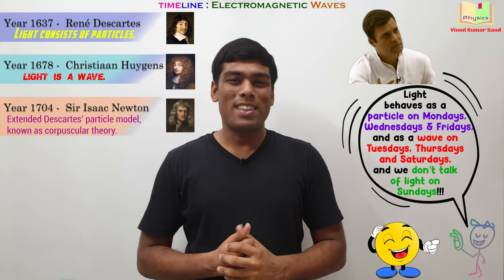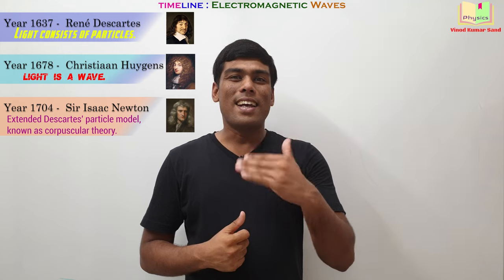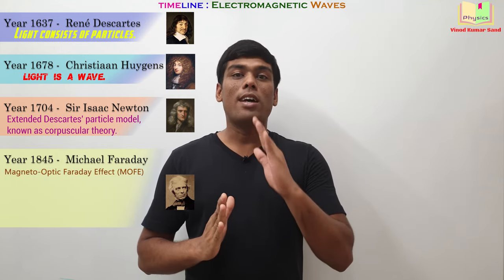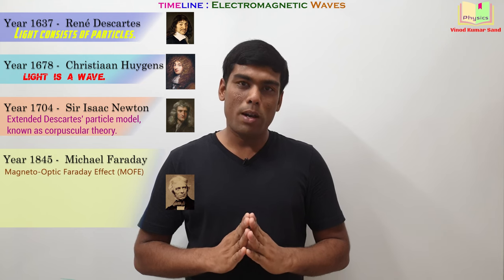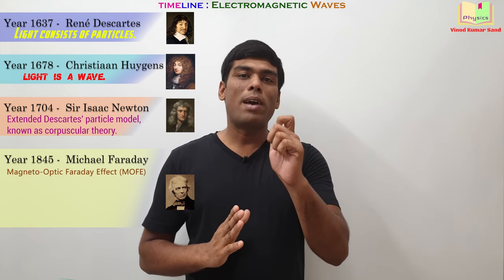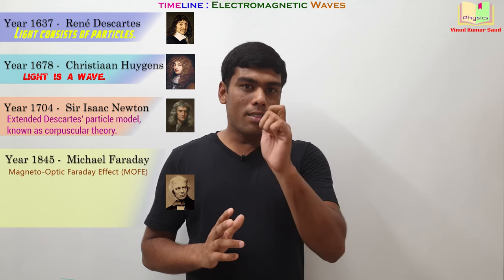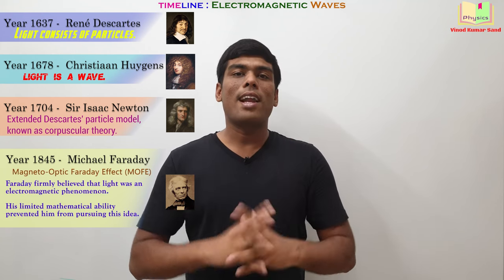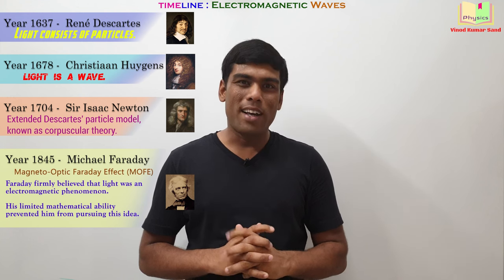In 1845, Faraday came up with his own set of experiment, MOFE, magneto-optic Faraday effect. In this effect, Faraday was convinced that light is an electromagnetic phenomenon.